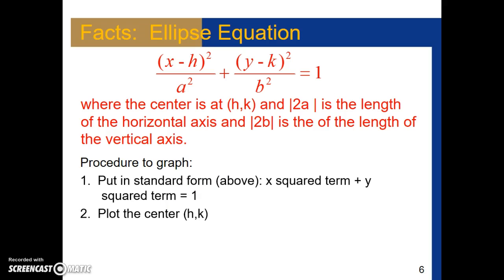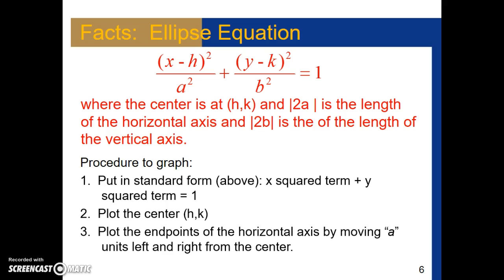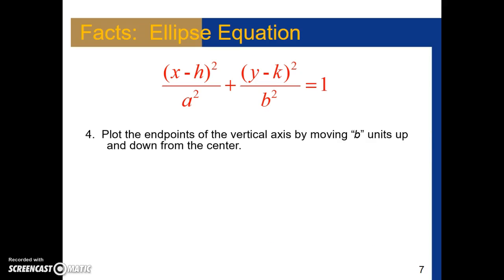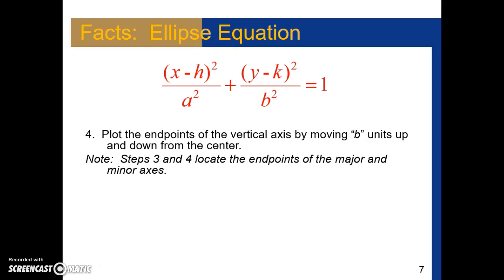Then we plot the center point (h, k). Next, we plot the end points of the horizontal axis by moving a units to the left and a units to the right from the center point. Then we plot the end points of the vertical axis by moving b units up and down from the center. I should clarify: the vertical axis would only be the minor axis if a is larger than b — we could have a vertical major axis. Steps three and four locate the end points of the major and minor axes.